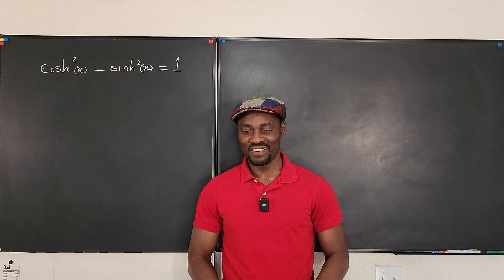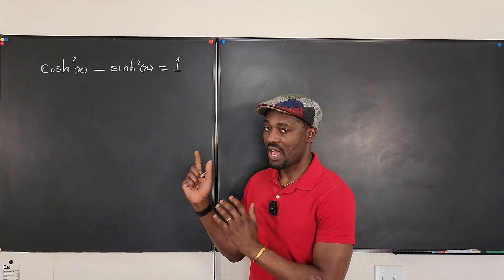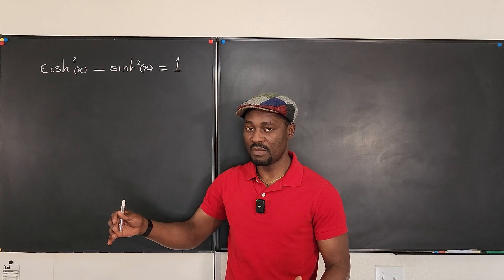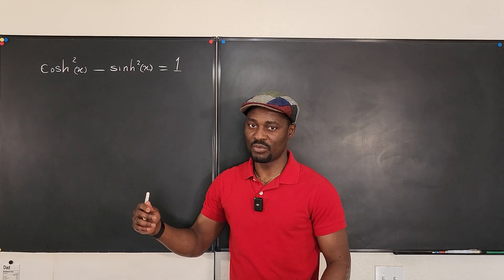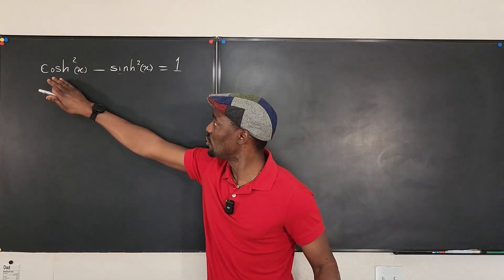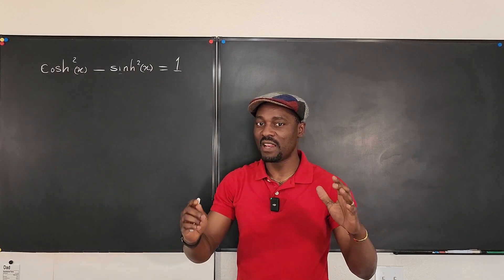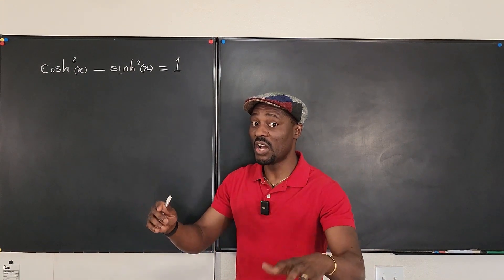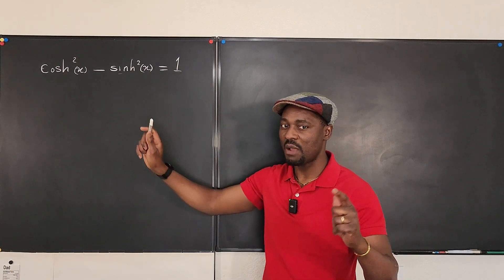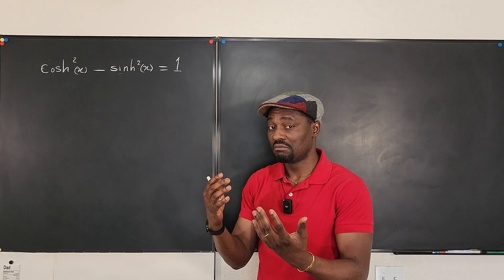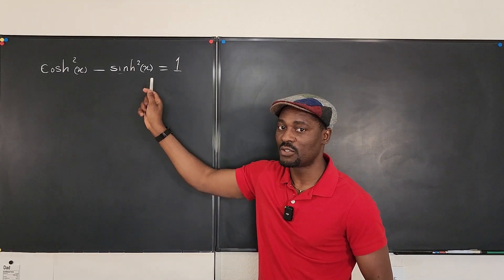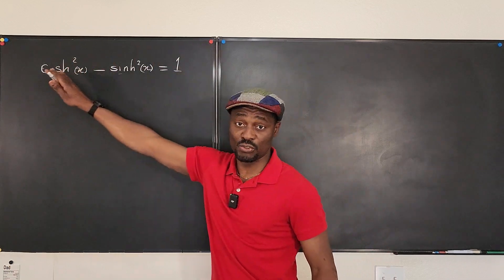Welcome to another video. The mission is to verify this hyperbolic trig identity: hyperbolic cosine squared minus hyperbolic sine squared equals one. This is contrary to regular trigonometry where cosine squared x plus sine squared x equals one. In hyperbolic trigonometry we get the opposite — there's a minus sign between them: cosh²x minus sinh²x equals one. We want to show that this is true.